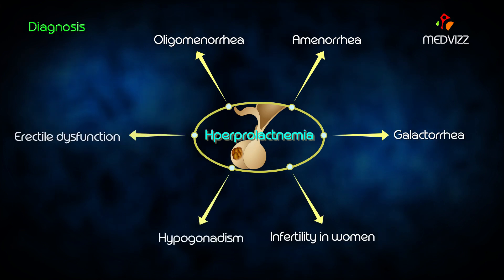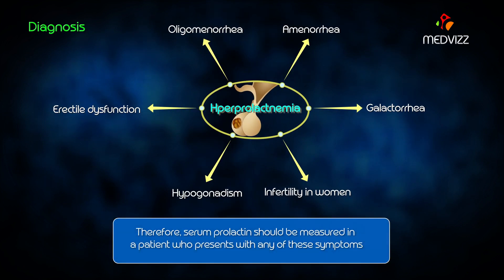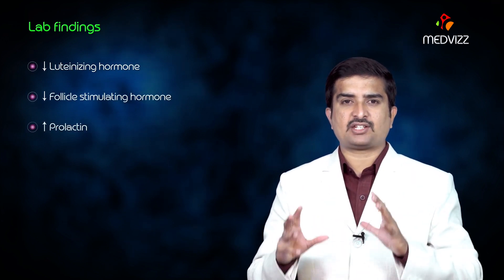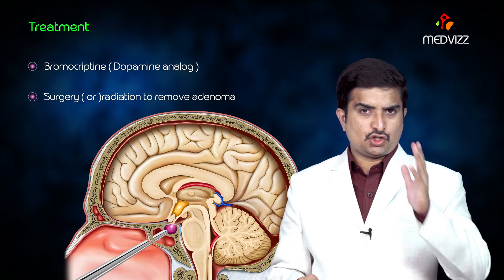Hypogonadism and erectile dysfunction are predominant symptoms in men; therefore, serum prolactin levels should be measured in patients presenting with any of these symptoms. Lab findings include decreased luteinizing hormone and follicle stimulating hormone, and increased prolactin levels. Treatment can be done by bromocriptine, which is a dopamine agonist to suppress prolactin secretion, or by surgery or radiation to remove the adenoma.